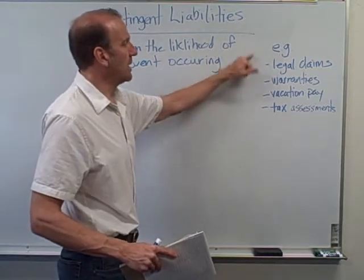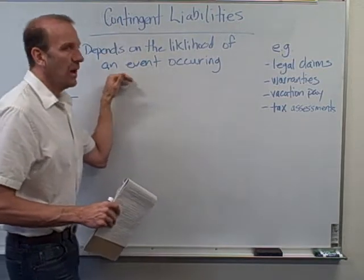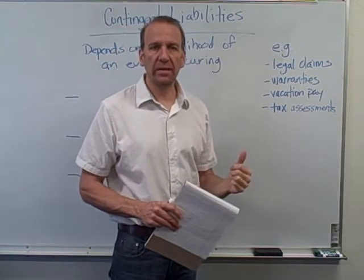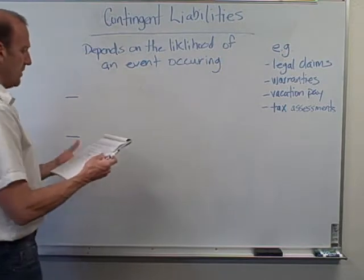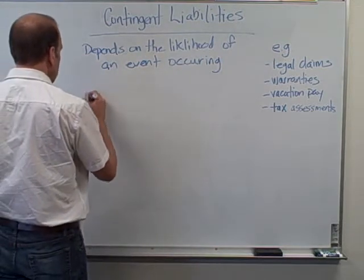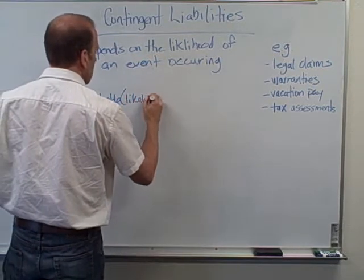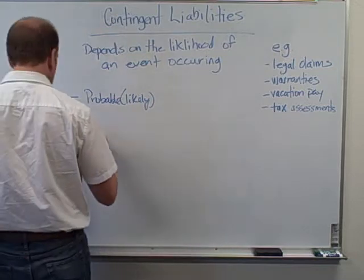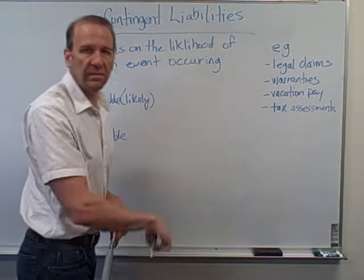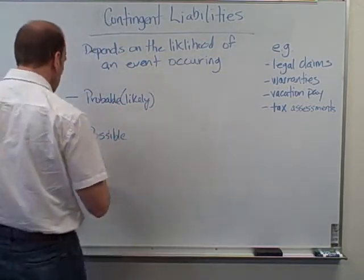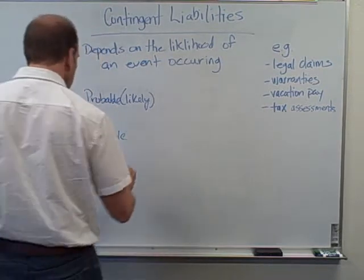Here are some of the more common contingent liabilities that we might have to record. It depends on the likelihood of an event occurring — how we're going to treat these contingent liabilities. It's a three-step process. The first is we're going to determine whether it's probable, which means likely, or it might be possible, or the contingent liability might be remote, which would be very unlikely.